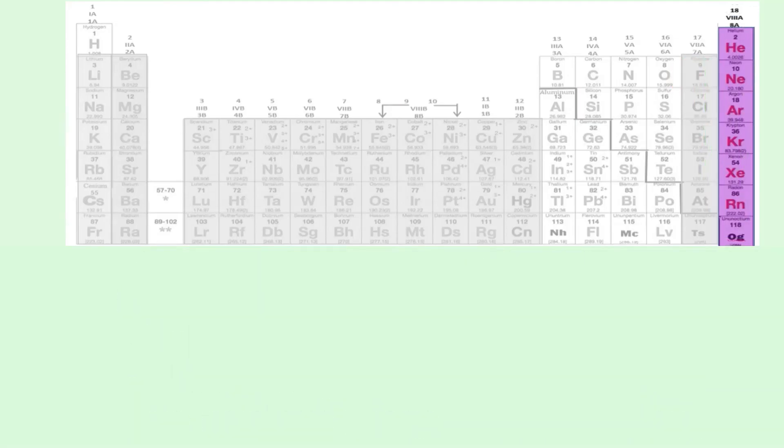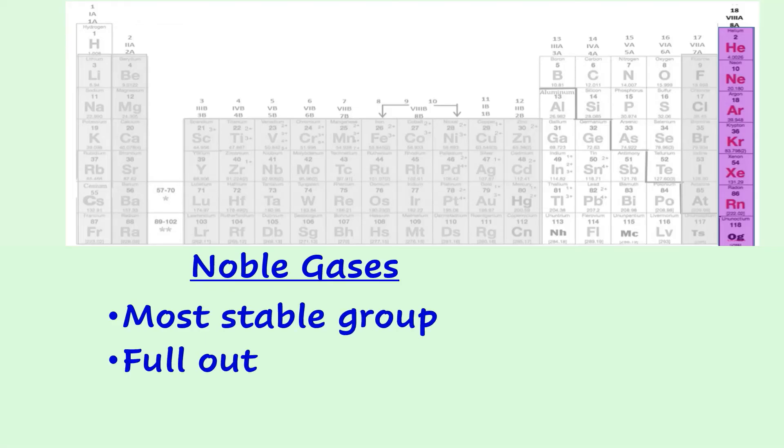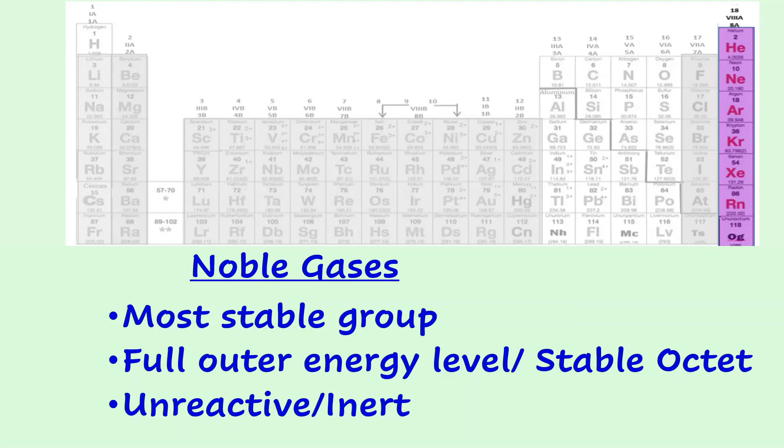The elements in group 18 are called noble gases. They tend to be inert or unreactive because they already have eight electrons in their outer shell. Helium is the exception. That atom is stable with a full first energy level containing only two electrons.